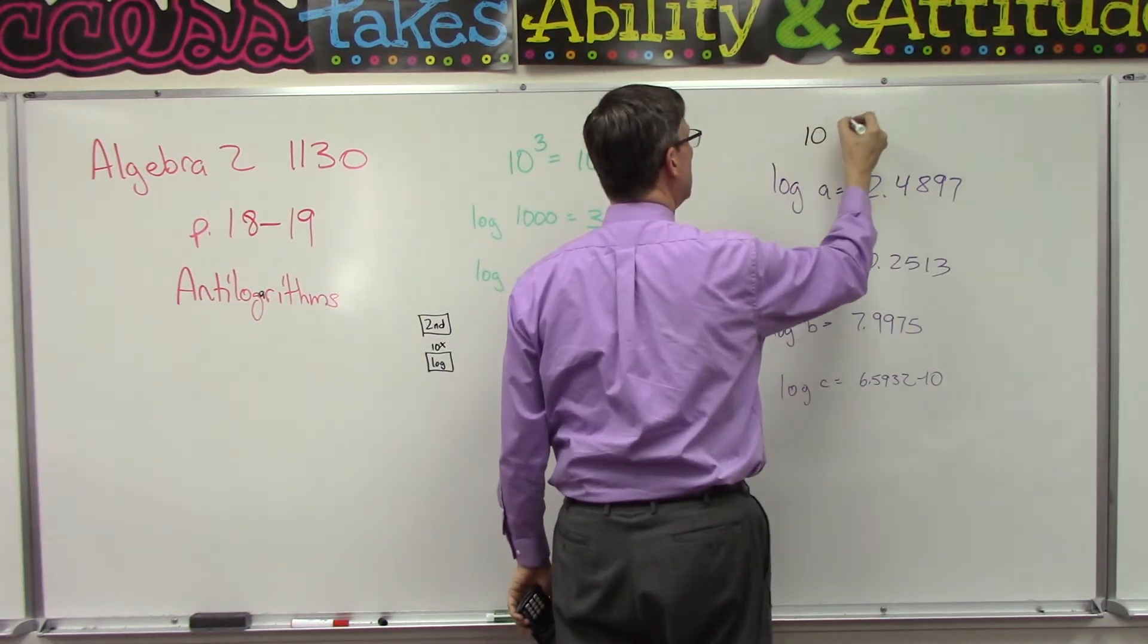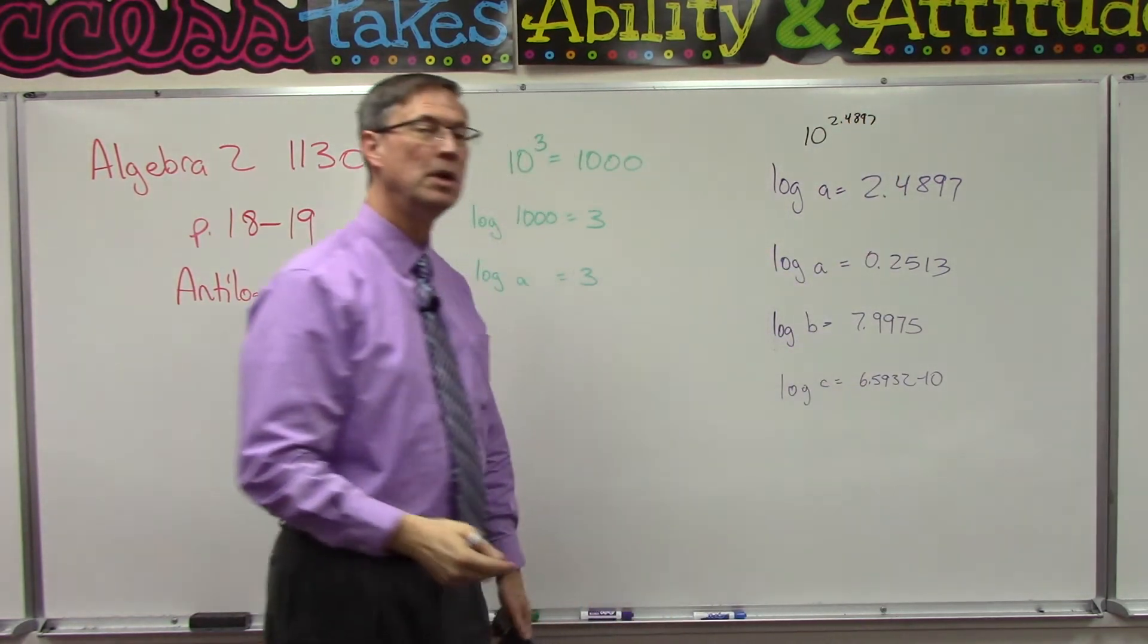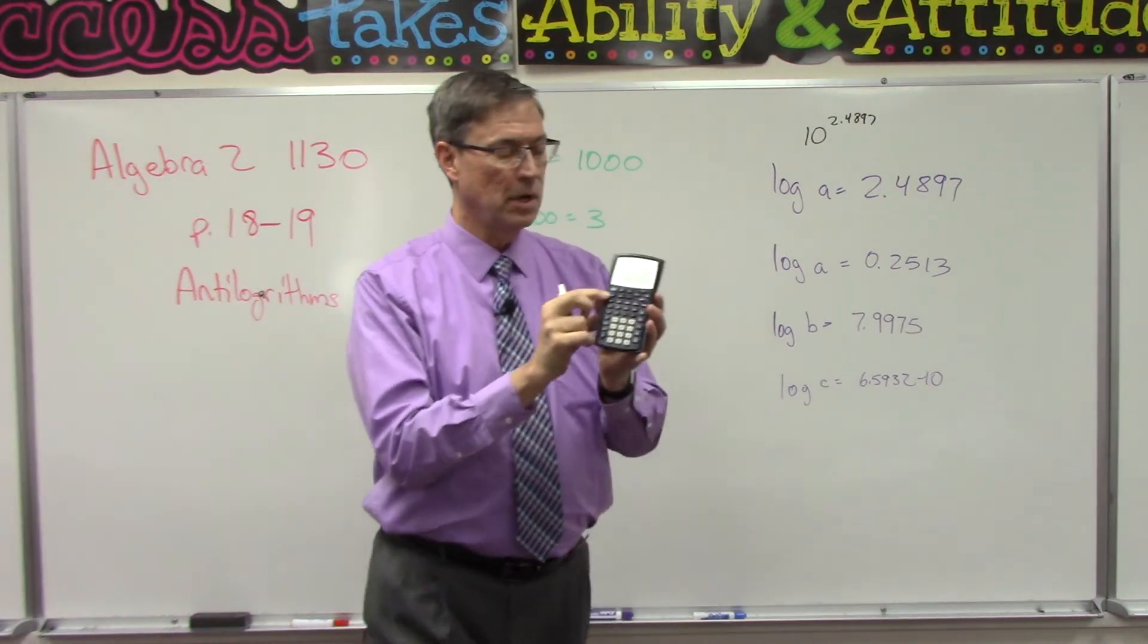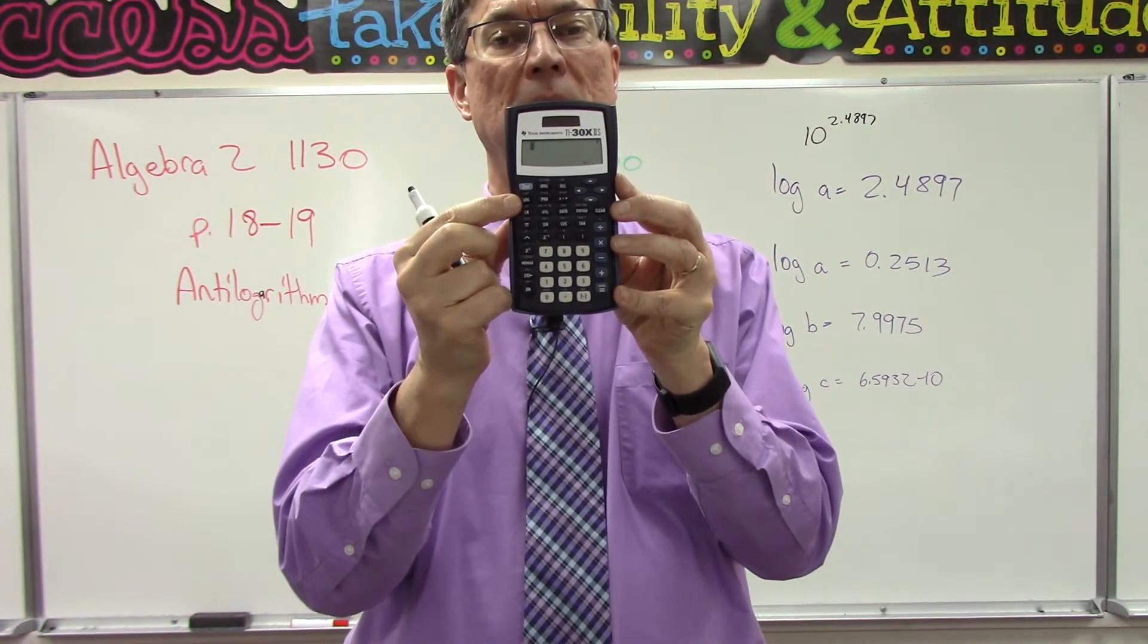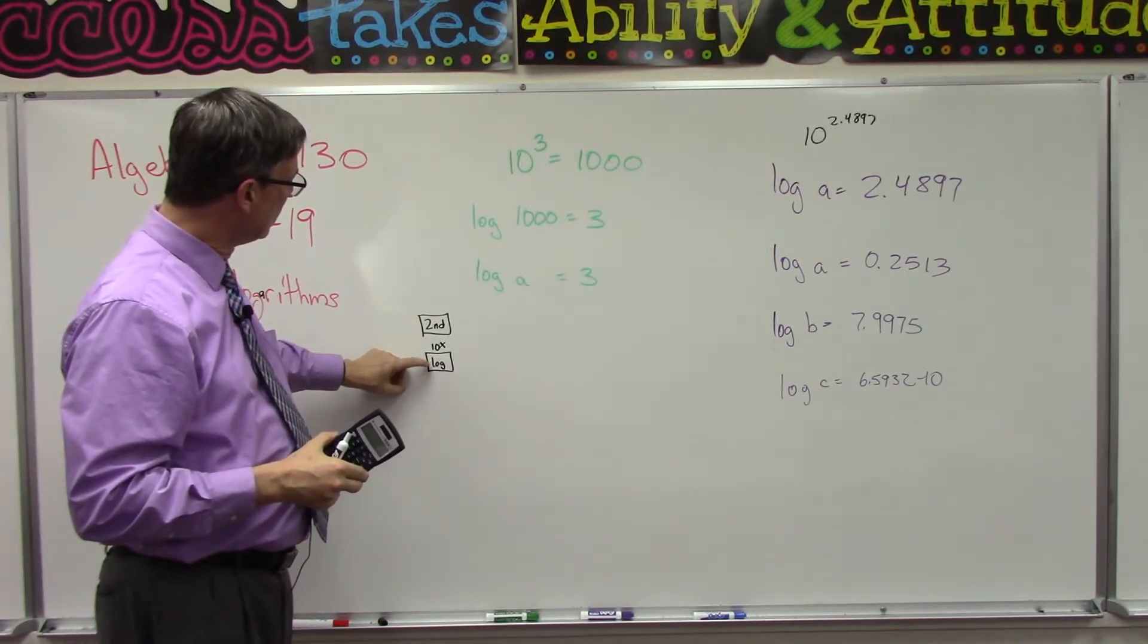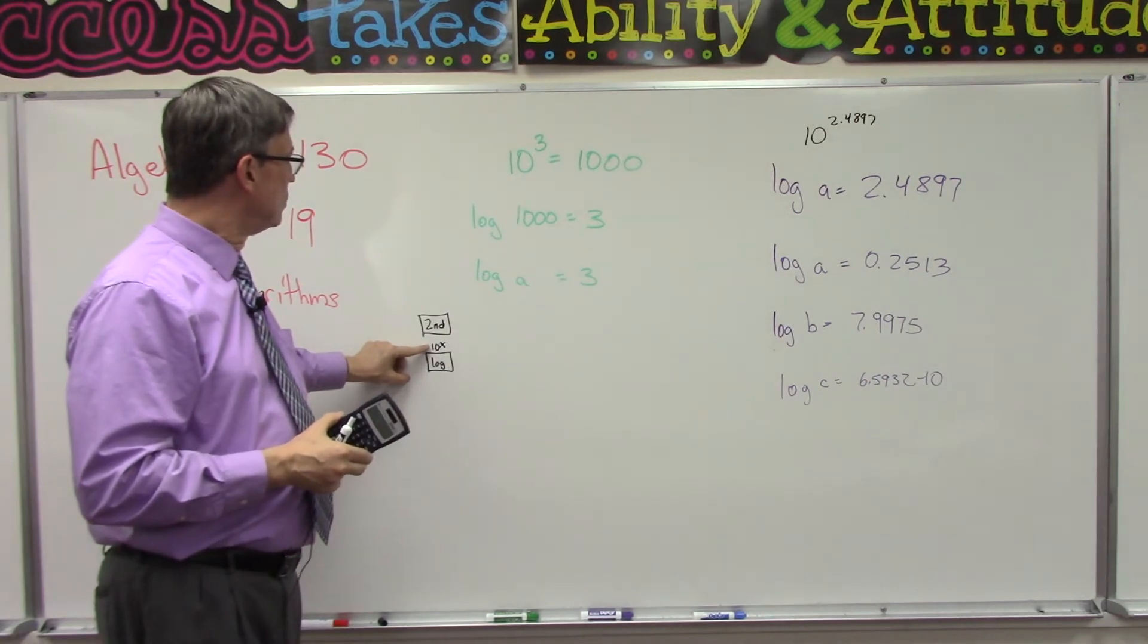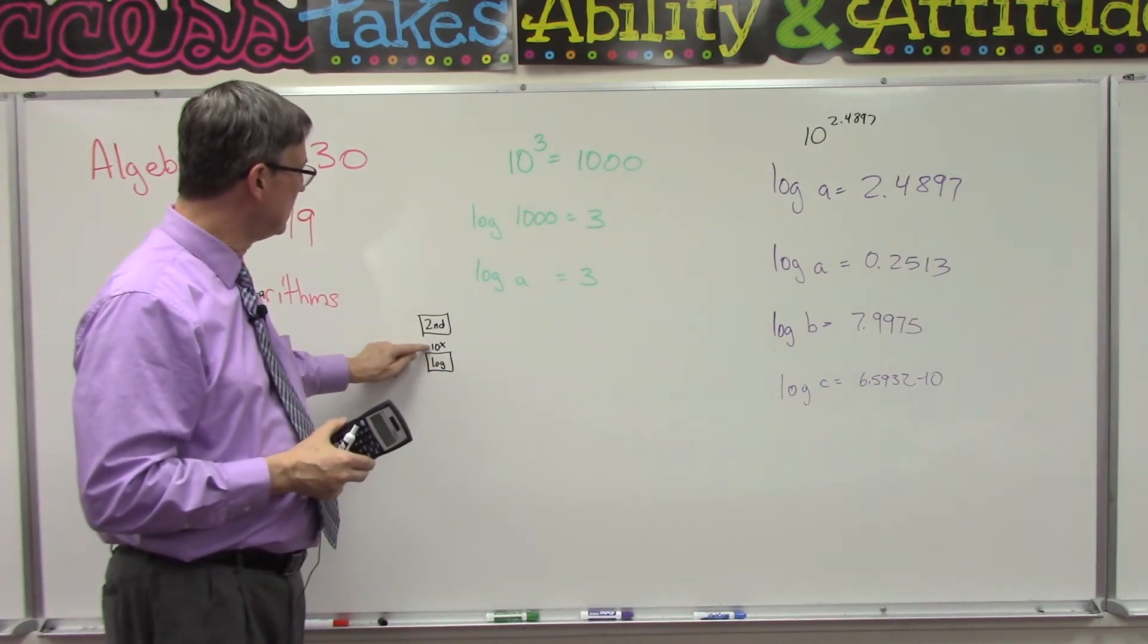So what if I wrote 10 and I raised it to the 2.4897 exponent? What number would that be? Well, there's a key on your calculator. Every calculator is a little bit different. On this calculator, see the blue second function underneath it? It says log. Right above the log key, it says 10 to the x power. That's what we were just talking about. So if I hit the second function and then I hit this button, it actually activates the 10 to the x power, and then I can put in this number.